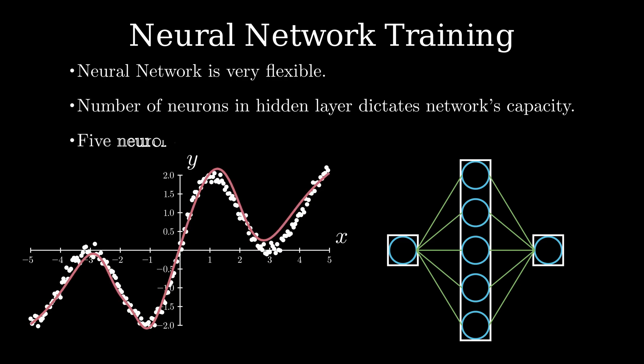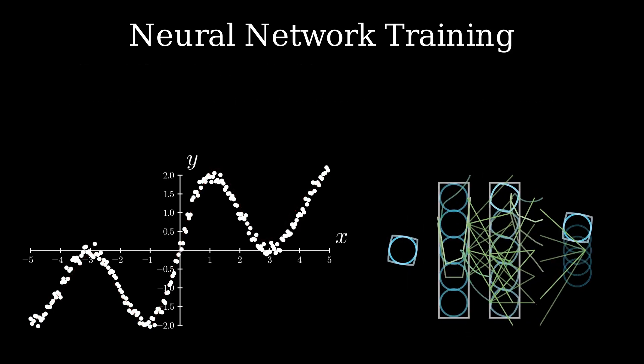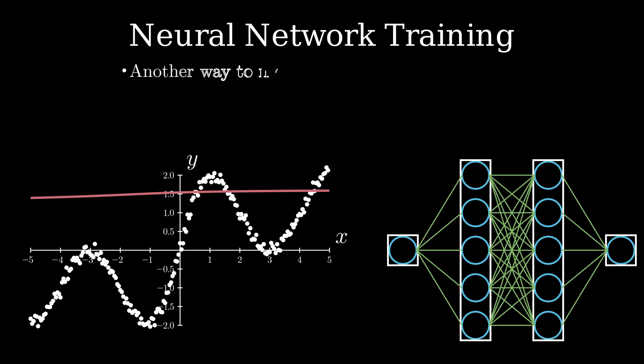There's another way to increase network's capacity and that's by increasing the number of hidden layers. In this case, with two hidden layers and five neurons each, the network fits the data perfectly.